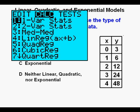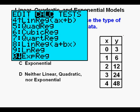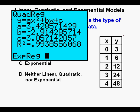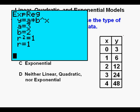Press STAT. Arrow once to the right to the CALC submenu. Arrow down to zero exponential regression. Press ENTER. Press ENTER again. These numbers mean 3 times 2 to the power of x and r squared is 1, meaning a perfect fit.